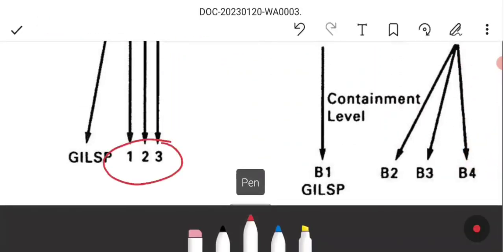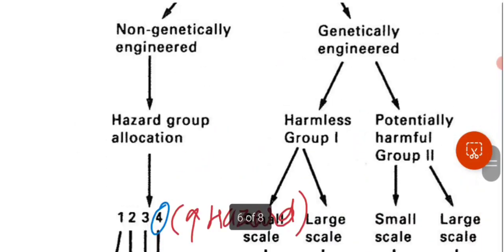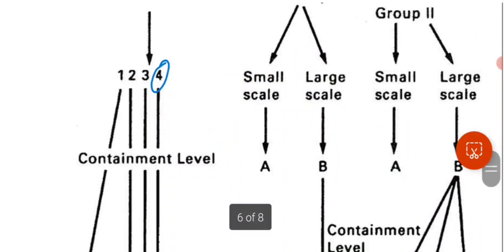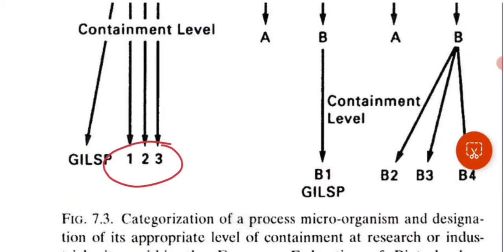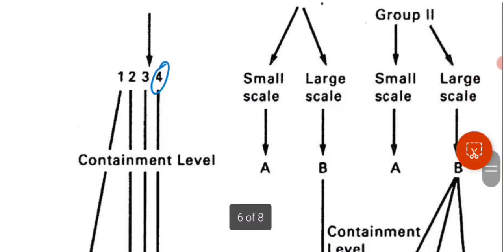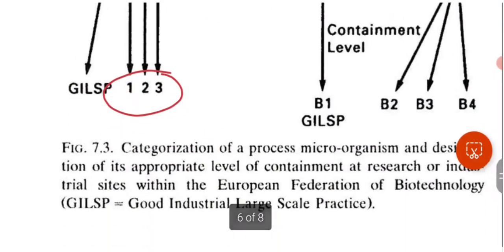Beyond GILSP, containment levels 1, 2, and 3 apply as hazard increases, with level 4 for the most dangerous group. For genetically engineered organisms, we divide them into harmless and potentially harmful groups. For harmless organisms at large scale, we need GILSP (B1). For the potentially harmful group at large scale production, containment levels B2, B3, and B4 are required, while small-scale production of harmless organisms may not require formal containment.